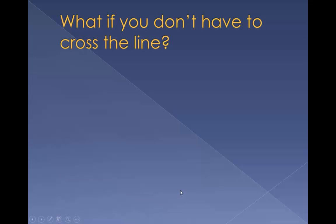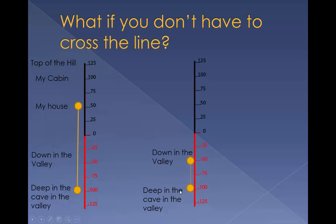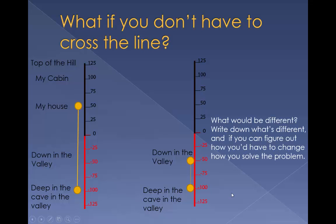What if you don't have to cross the line? What if instead of this, we wanted to know the distance between down in the valley and deep in the cave in the valley? What would be different? Write down what's different and if you can, figure out how you'd have to change how you solve the problem.